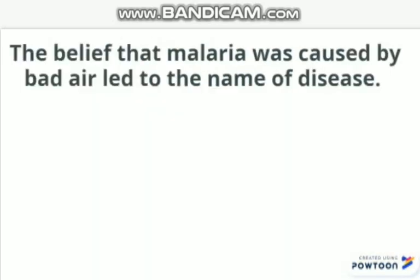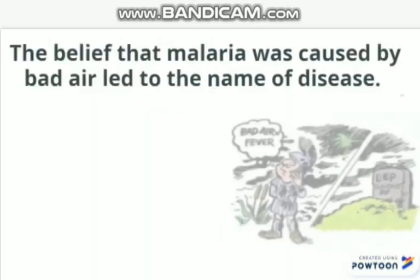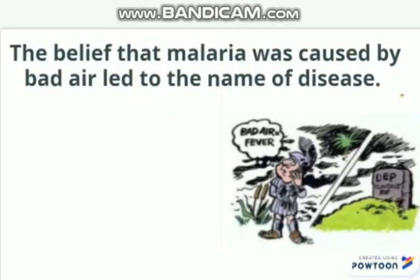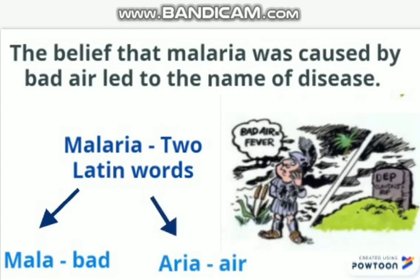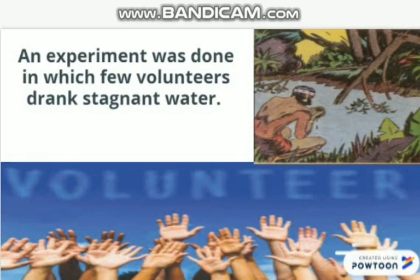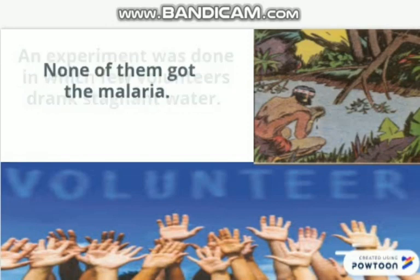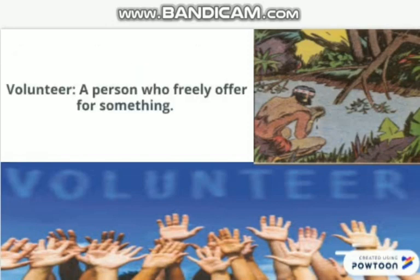The belief that malaria was caused by bad air led to the name of the disease. Malaria is a word derived from two Latin words — 'mala' means bad, 'aria' means air — so malaria means bad air. An experiment was done in which a few volunteers drank the stagnant water, but they didn't get malaria. So it was proved that stagnant water did not cause malaria.